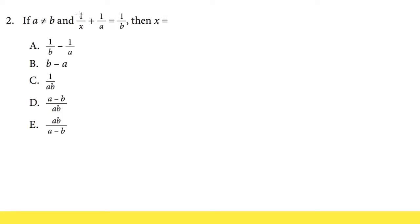We are trying to solve an equation that involves fractions, so this is what we are going to do. First, we are going to figure out what's the lowest common denominator for x, a, and b, and then we are going to multiply through this equation by the LCD, the lowest common denominator, so that we can get rid of the fractions.